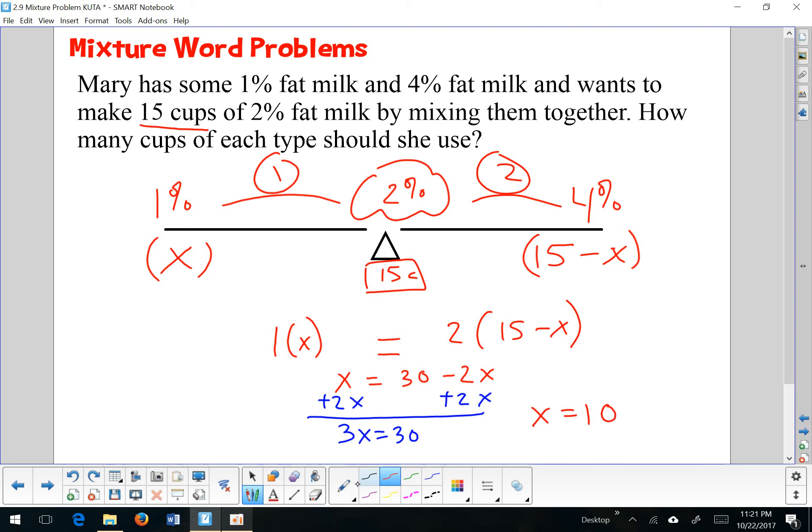But that only tells me that I need 10 cups. I need 10 cups of the 1% milk, 10 cups of the 1% fat milk, and that means 15 take away 10 would be 5 cups of the 4% fat milk. So don't forget to actually answer the question, which is how much of each kind should she use? So 10 cups of the 1% and 5 cups of the 4%. Let's take a look at our final question.